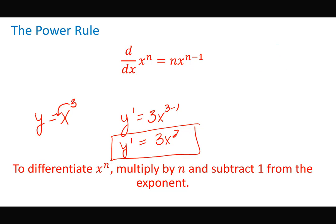With the power rule, you simply bring the power out front and use it as multiplication, and subtract 1 from the exponent. That's all you're doing. This is called the power rule: multiply by that n, and then subtract 1 from the exponent.